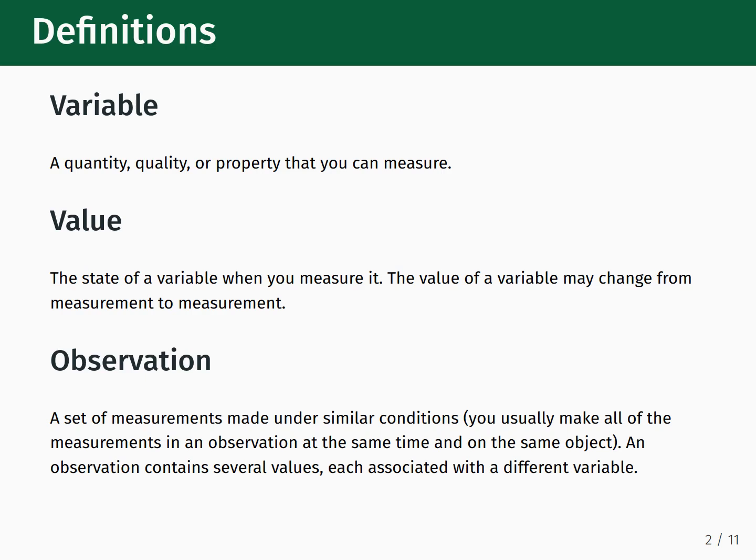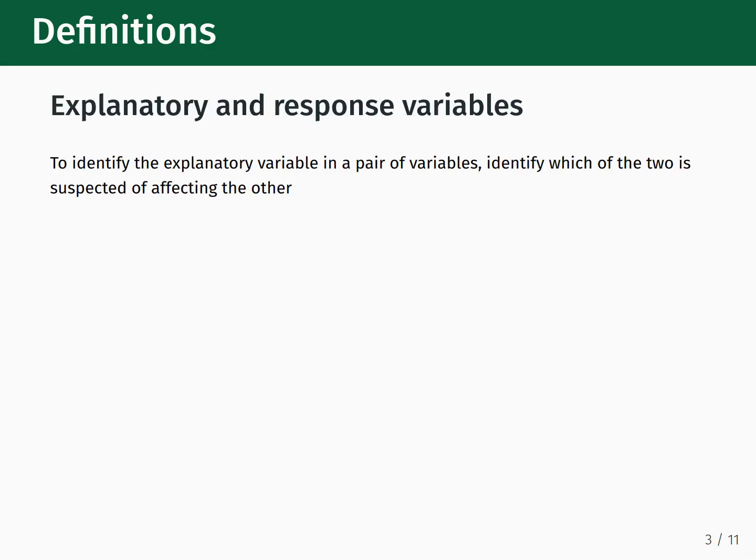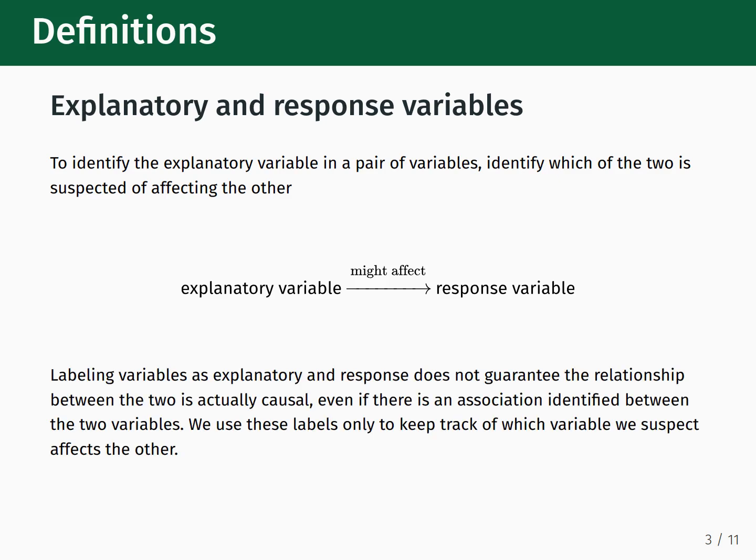When discussing different kinds of variables, you will often find that they're lumped into one of two classes: either explanatory variables or response variables. To identify the explanatory variable in a pair, you need to identify which of the two you suspect of affecting the other. Schematically, you would draw it as an explanatory variable possibly affecting and leading to a response variable. Labeling variables as explanatory or response does not guarantee the relationship between the two is actually causal, even if there is an association identified between the two variables. We use these labels only to keep track of which variable we suspect affects the other.